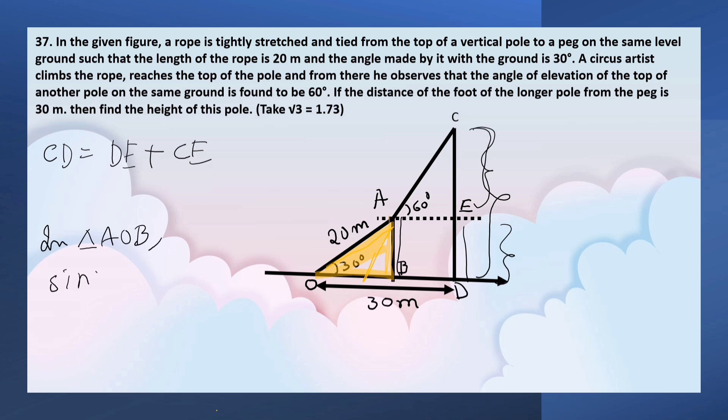In triangle AOB, sin 30° equals AB over 20, where 20 is the hypotenuse and AB is the opposite side. Sin 30° is half, so that equals AB by 20.